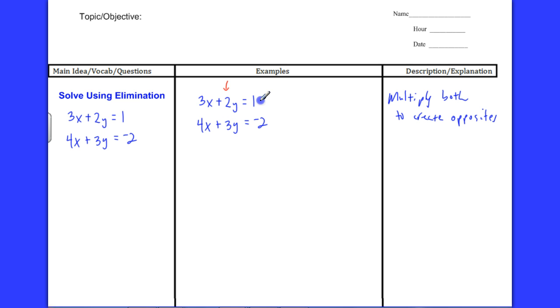So I am going to multiply this equation, the whole thing, so that I can turn the y into a 6. If I multiply this 2 times 3, that would give me 6y. But make sure you do it for every term. So this becomes 9x plus 6y equals 3.